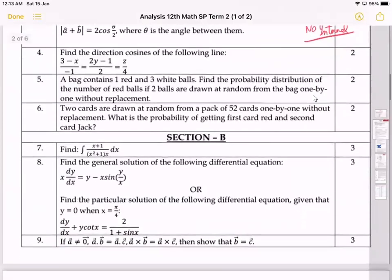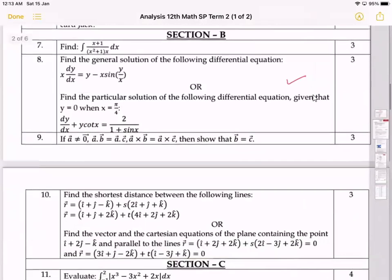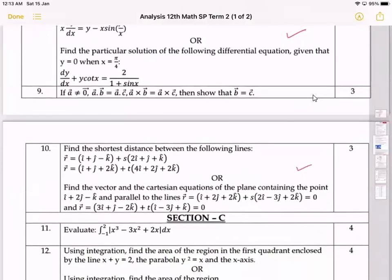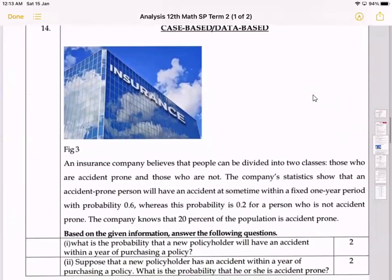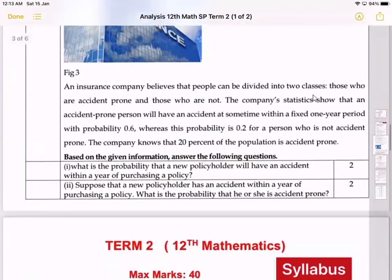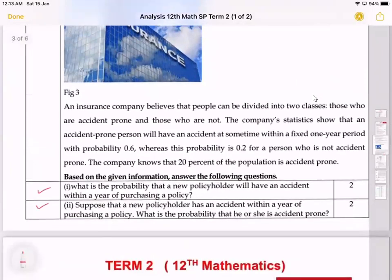In Section B, you will get one internal choice and two internal choices. That means here you have two internal choices. In Section C, one question comes with internal choice. And in case study, as I said to you, it will comprise of two questions. It will comprise of one question with two sub-questions in it.